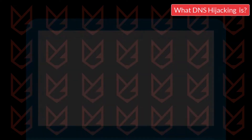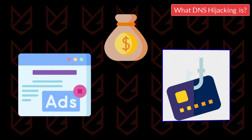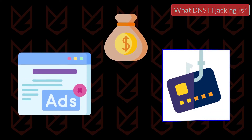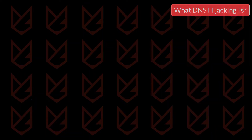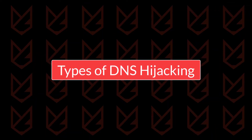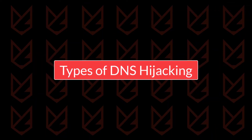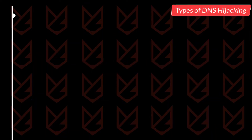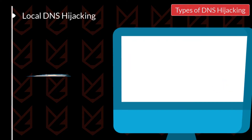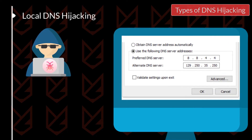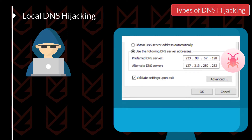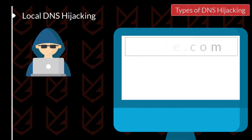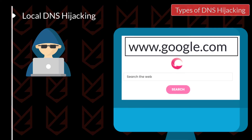They generate revenue by advertising or stealing your money directly by infiltrating bank login details or credit card information. Now let's see the types of DNS hijacking. Local DNS hijacking: hackers could use a Trojan to replace the DNS server address on the user's computer. They change the DNS server settings so that the user can be redirected to the hacker's site.